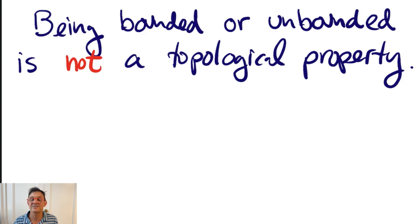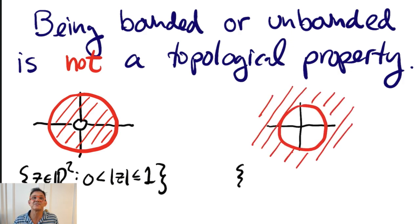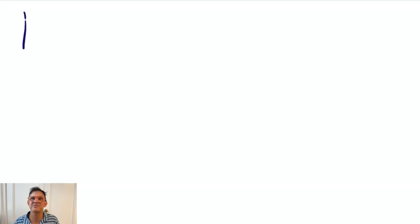To see that boundedness isn't topological, consider the punctured unit disk, which is bounded. This space is homeomorphic to the set of points in the plane whose distance from the origin is greater than or equal to one. That's an unbounded set. The map Z maps to one over Z. Here I'm identifying R^2 with the complex numbers. It's a continuous function, and it's invertible. It's its own inverse. And that shows that you can have a homeomorphism between a bounded space and an unbounded space.